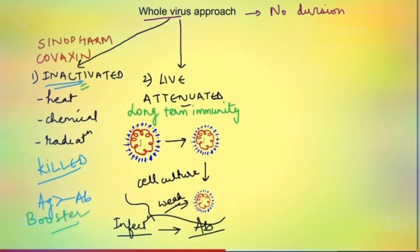However live attenuated vaccines are a bit dangerous and need robust safety data which may take a lot of time. Also they cannot be used in immunocompromised people. Probably this is the reason that we don't have any candidate vaccine for COVID in this category.